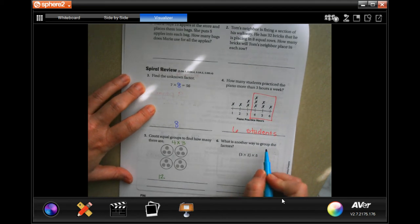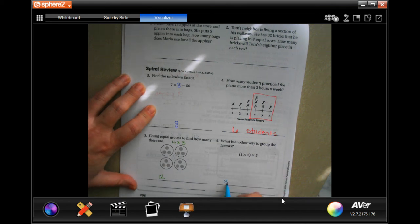What is another way to regroup the factors? They're all multiplications, so we can just move the parentheses to over here. That is the associative property.